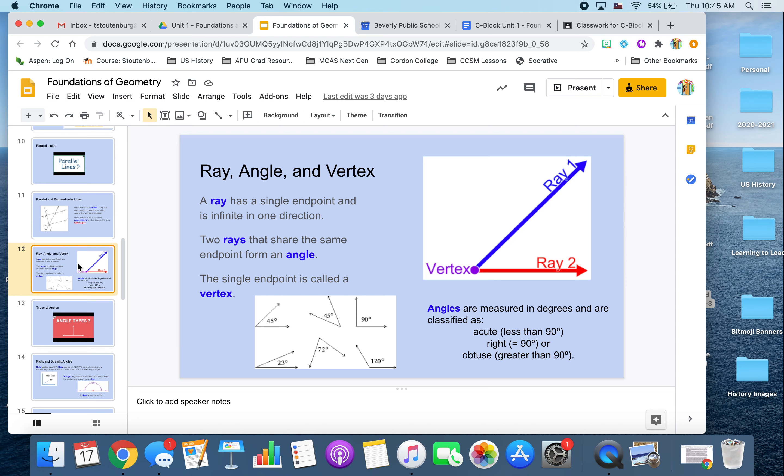Next, we have ray, angle, and vertex. Now, a ray is similar to a line, except the difference with a ray is that a ray has a single end point. So here we have a single end point, but then with the arrow at the end, it signifies that it goes infinitely in one direction, whereas a line goes off in two directions.